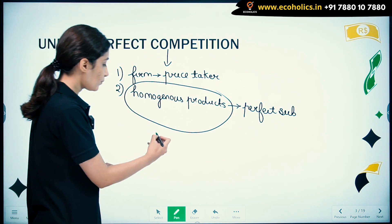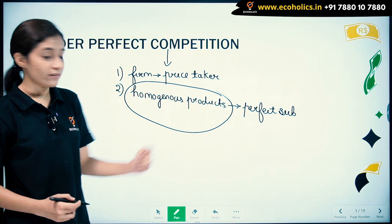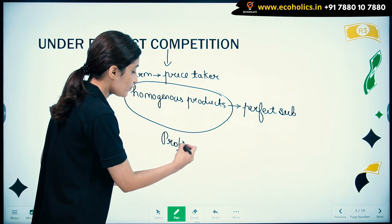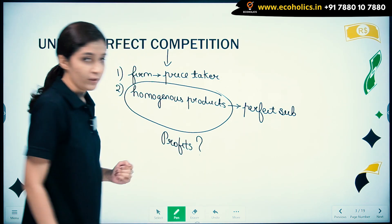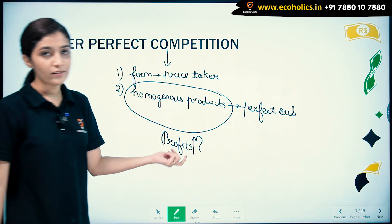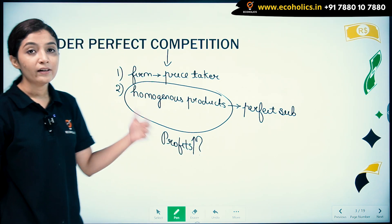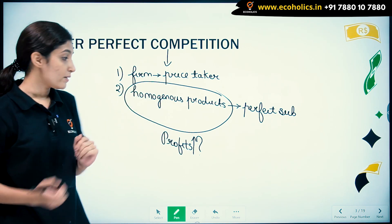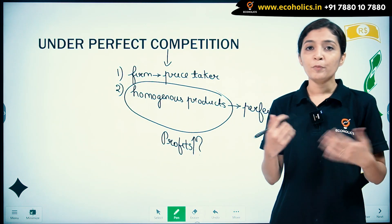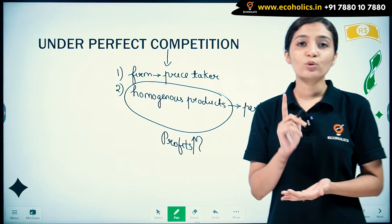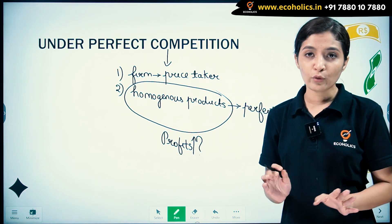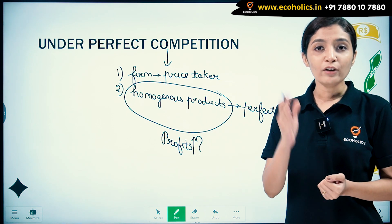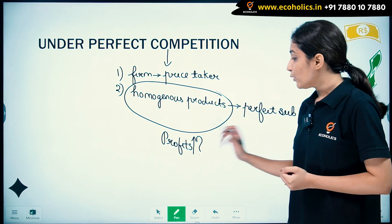The next question that arises is: how does a firm increase its profits in case of perfect competition? A firm can sell a greater quantity at the same prevailing price. Since the firm is not able to influence the price, it has only one alternative — it can increase its quantity.